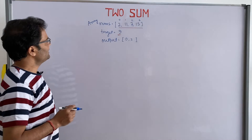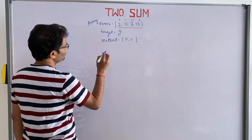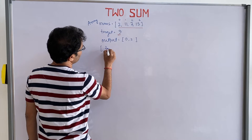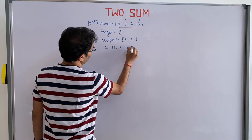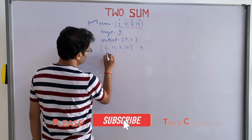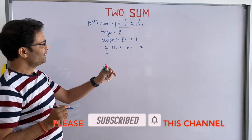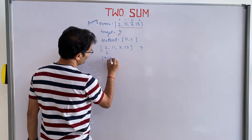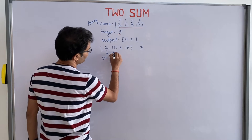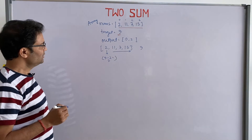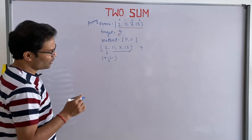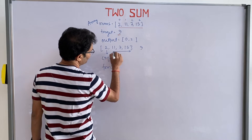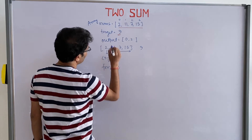The basic approach is very simple. What you have to do is take the first number. Suppose the target is 9 and you take the first number 2 — you are searching for 7 throughout the remaining array. This is the basic approach using a simple nested loop.